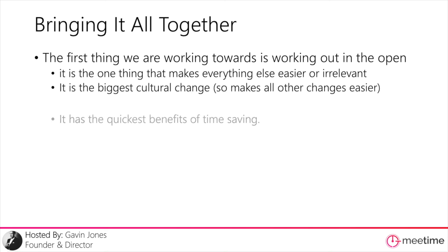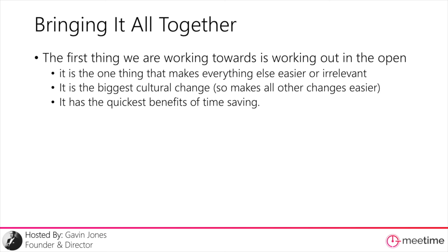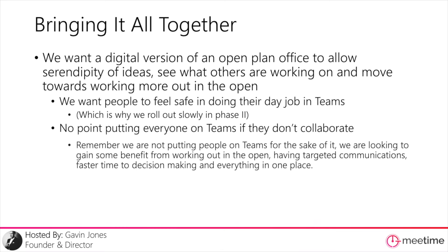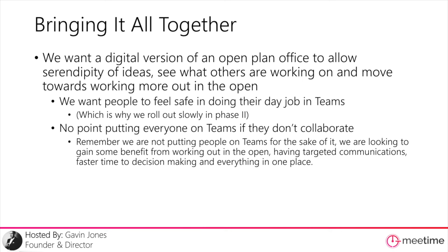Bringing it all together, the first thing we're working towards through the whole of phase one and phase two is working out in the open. It's the one thing that makes everything else easier or relevant. It's going to be the biggest cultural change of anything we'll look at, and therefore it makes all other changes easier, but it also requires the most pain. Once you've done that, everything else is going to be easier, which is a good place to be, with the quickest benefits of time saving.